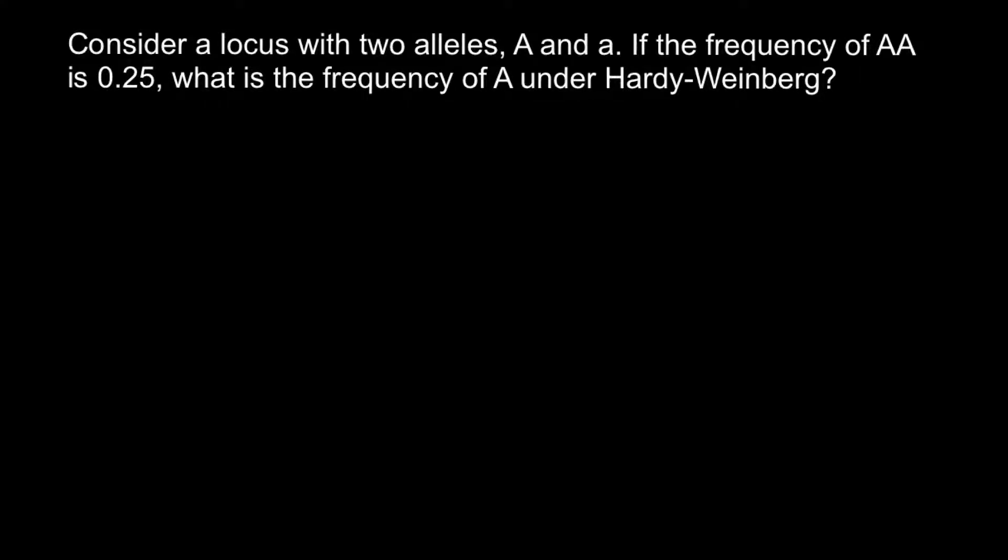Hello and welcome to Nikolai's genetics lessons. Today's video is going to be about population genetics, and here's a problem. Consider a locus with two alleles, dominant allele A and recessive allele a. If the frequency of the homozygous dominant genotype is 0.25, what is the frequency of the dominant allele under Hardy-Weinberg assumptions and equilibrium?